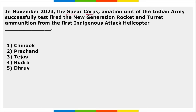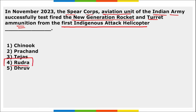The Spear Corps — the aviation unit of the Indian Army — successfully test-fired new generation rocket and turret ammunition from the first indigenous attack helicopter named Rudra.